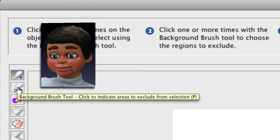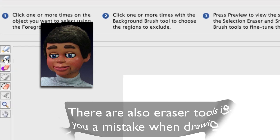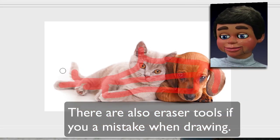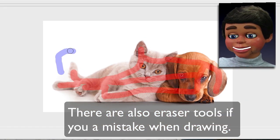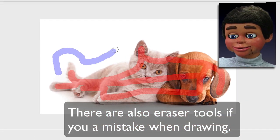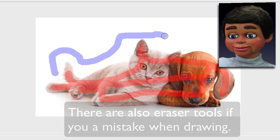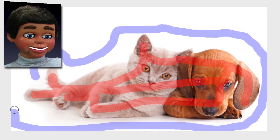The next tool down is the Background Brush tool. It's going to be a different color, and I'm just going to show Photoshop Elements what my background is going to be. You don't have to be exact — very easy stuff.